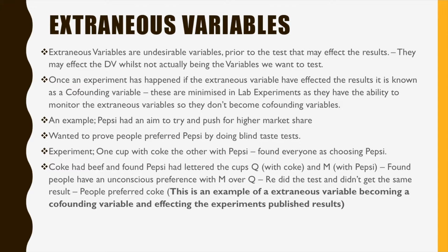To understand the real benefits of a lab experiment, you need to know what an extraneous variable is. These are undesirable variables prior to testing that may affect the results — variables other than the IV which may affect the DV. Once an experiment has happened and an extraneous variable has affected the results, it is known as a confounding variable. These are minimized in lab experiments, as researchers can monitor extraneous variables so they don't become confounding variables.